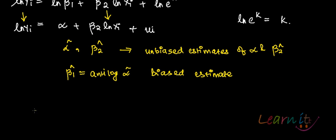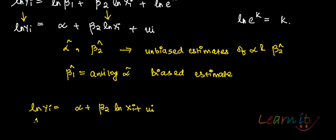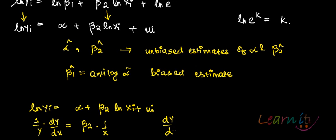Let us look at our model again: log of y_i equals alpha plus beta 2 log of x_i plus u_i. Now, suppose you want to find the elasticity, which is defined as (1/y)(dy/dx). Differentiating gives dy/dx equals beta 2 times (1/x), so dy/dx equals beta 2 times y over x.